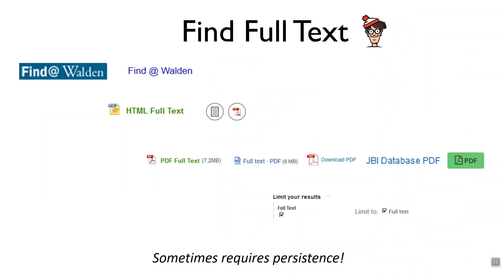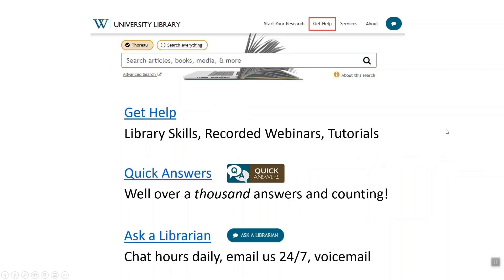Finding the full text can be a challenge — it's like Where's Waldo sometimes. Look for the 'Find at Walden' buttons; when you see those, they'll take you to databases where it thinks it finds the article. We have databases from many different vendors, so they tend to look different depending on where you are, and I just wanted to familiarize you with the different ways they might look.